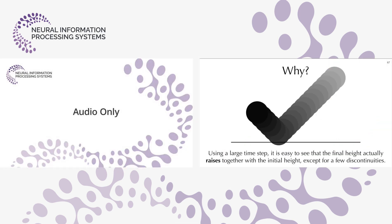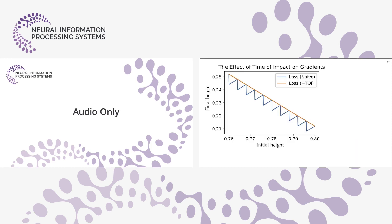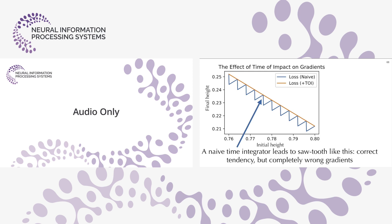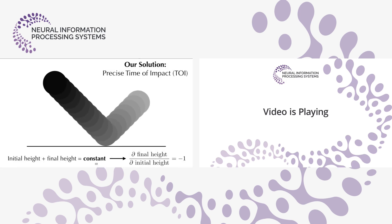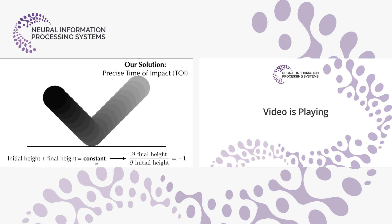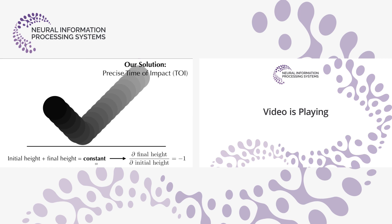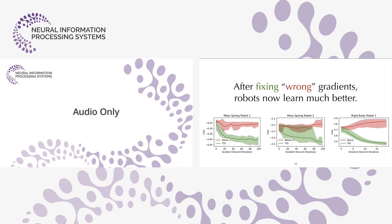This happens because collision detection is discrete. With a larger time step, the final height actually rises with the initial height except for discontinuities, giving a sawtooth curve with correct tendency but completely wrong gradients. The fix is to add Time of Impact (TOI). With TOI, the gradient is now correct, and the robot learns much better — without TOI it doesn't learn at all; with TOI the optimization curve does a decent job.